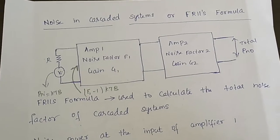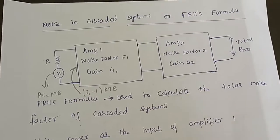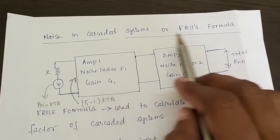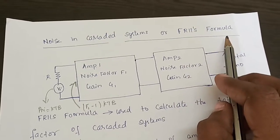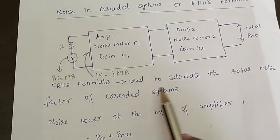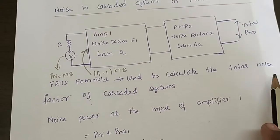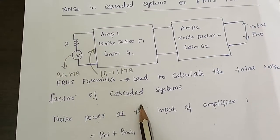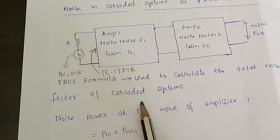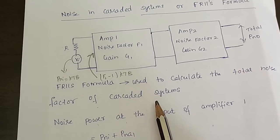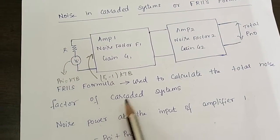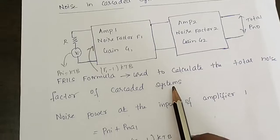Welcome students. In this lecture we are going to derive the noise in cascaded systems, which is otherwise called the Friis formula. This Friis formula is used to calculate the total noise factor of cascaded systems. Whenever we have two or more systems connected in cascade, the total noise factor can be calculated with the help of this Friis formula.